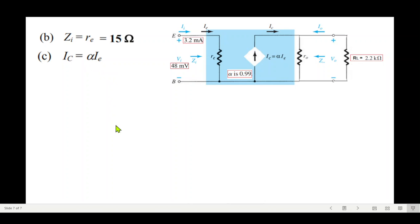rc is ic, which is alpha times ie. Plugging in the values, we know the value of alpha and we know the value of ie, 3 milliampere, so ic is 3.168 milliampere.